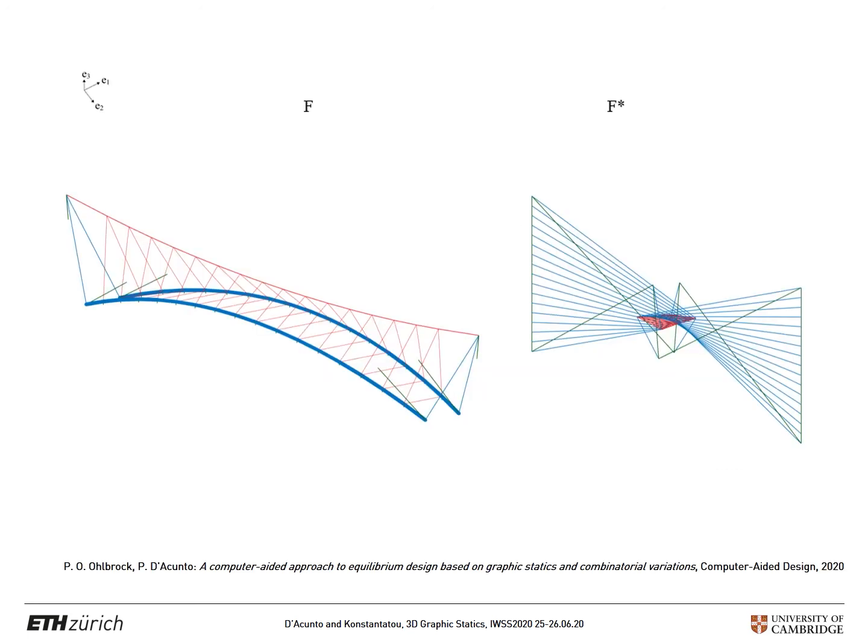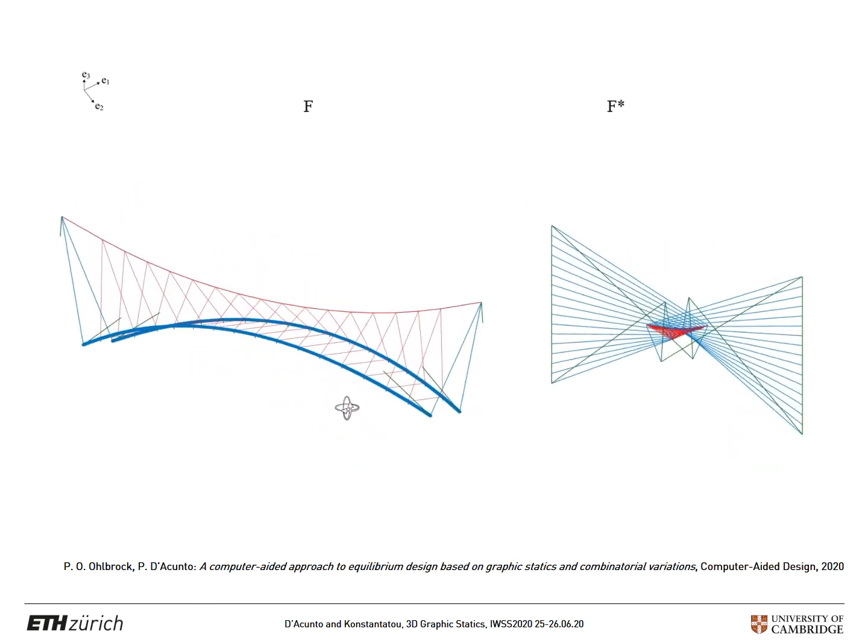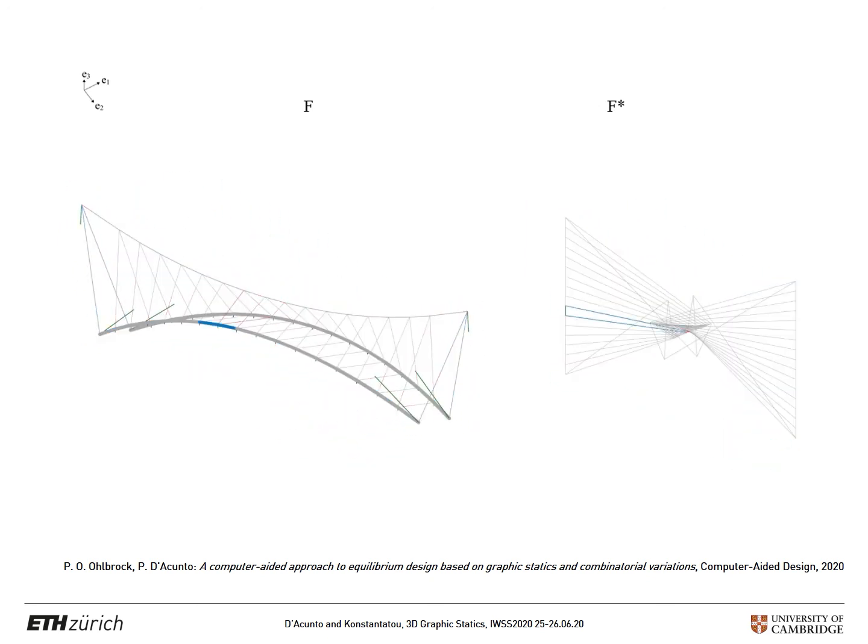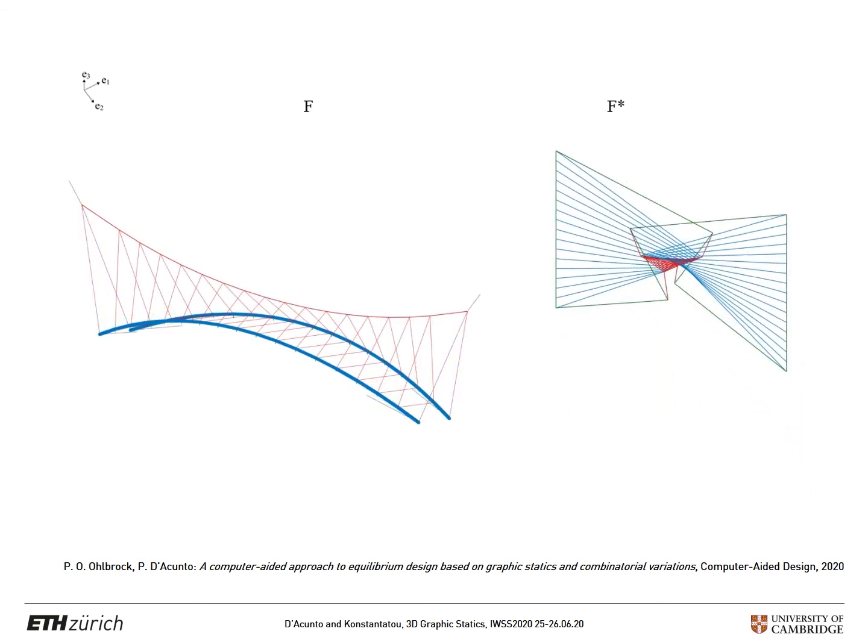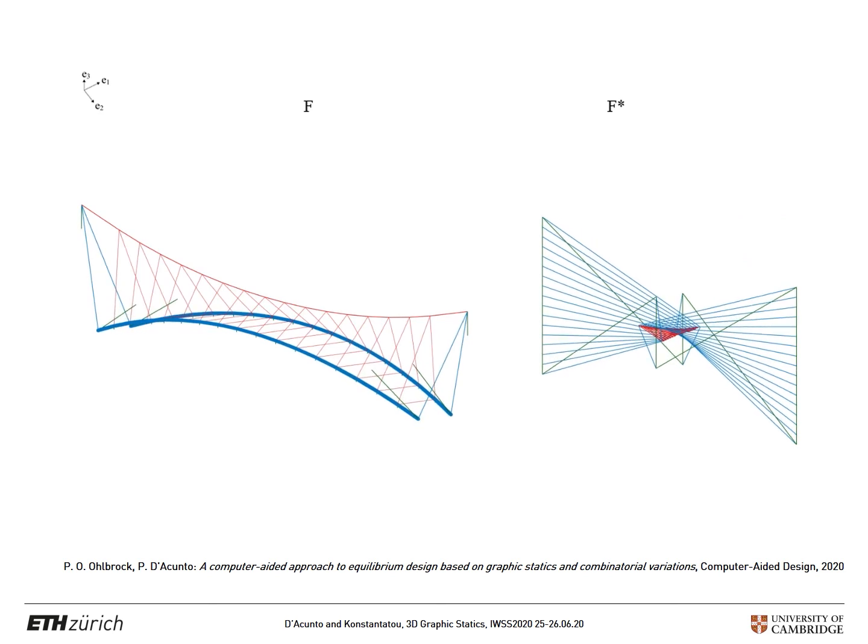An application of 3D graphic statics with a vector-based approach is shown here for the design of a pedestrian bridge. The form-finding of the bridge has been done using combinatorial equilibrium modeling. Thanks to the interdependency between form and force diagrams, it is possible to manipulate one of the two diagrams and assess the consequent transformation of the other one.